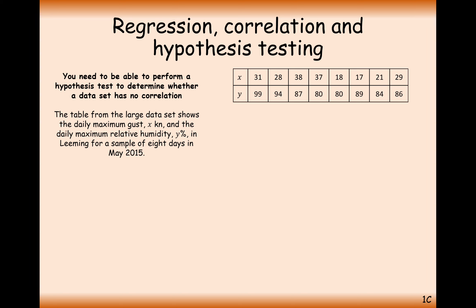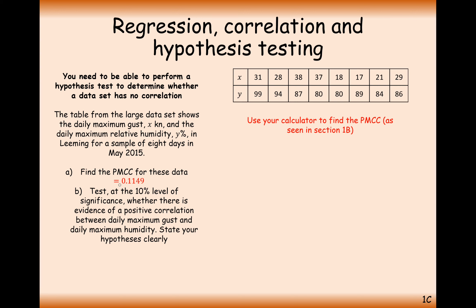Moving on to the final question: the table from the large data set shows a daily maximum gust x in knots and a daily maximum relative humidity y as a percentage in Leeming, for a sample of 8 days in May 2015. Find the PMCC of this data — using your calculator you get 0.1149. Test at the 10% significance level whether there is evidence of positive correlation between daily maximum gust and daily maximum humidity. State your hypotheses clearly.